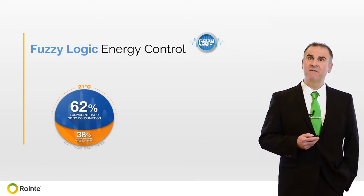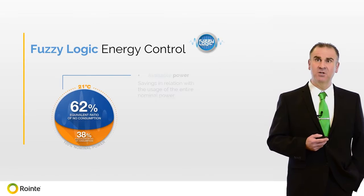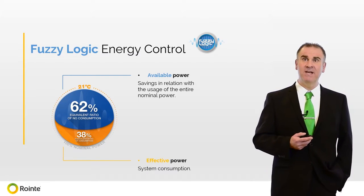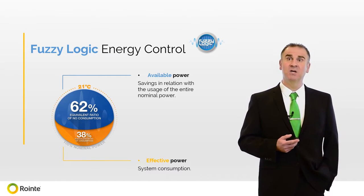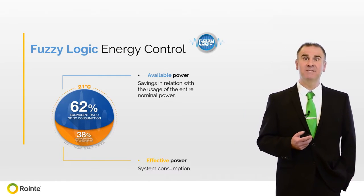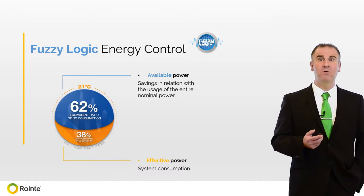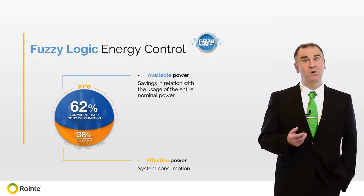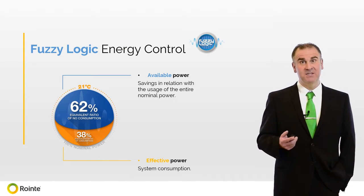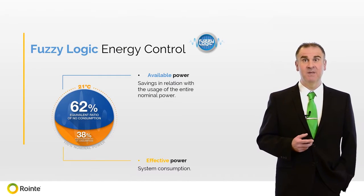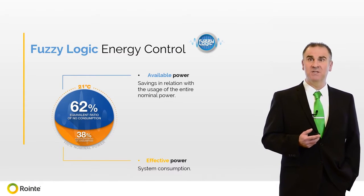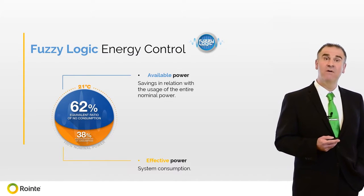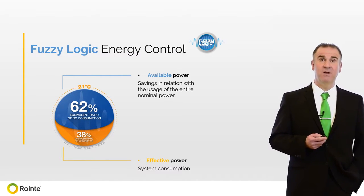With our fuzzy logic technology, at 21 degrees our radiators typically use just 38% of the nominal power, and therefore do not use 62%. This calculation can be used to work out energy usage over a given period.